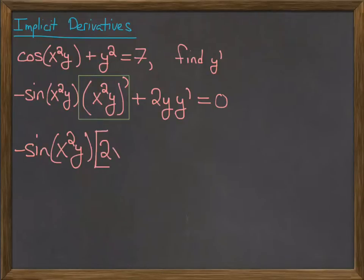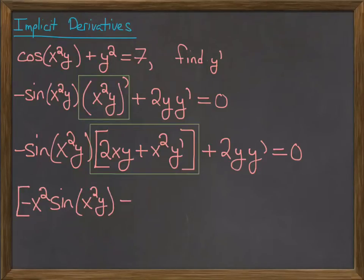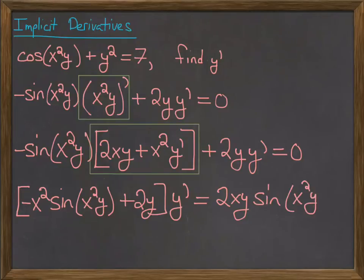So there's some product rule going on here, plus 2y y prime equals 0. The last step would be to solve for y prime, so you just move everything with y primes to one side, factor out a y prime, and then finally just divide to get your final answer and find the appropriate bubble.